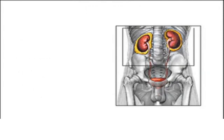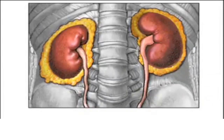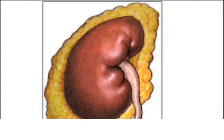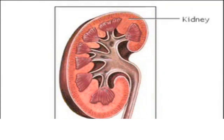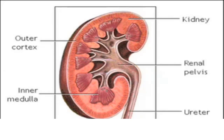Now let's enlarge a kidney to get a closer view. Here's a cut section of the kidney. Urine flows from the outer cortex to the inner medulla. The renal pelvis is the funnel through which urine exits the kidney and enters the ureter.